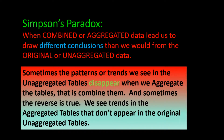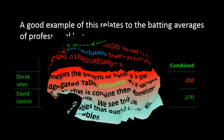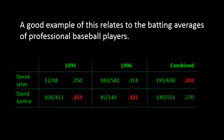What that means for us is that when we see patterns or trends in data, we need to realize that these trends may not hold true when we look at the data from a different perspective. This is what's called Simpson's paradox. Let's look at an example.